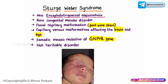These mutations do not occur in the germline and therefore cannot be passed on to offspring. That is the reason Sturge-Weber syndrome is called a non-heritable disorder — because these mutations do not occur in the germline.